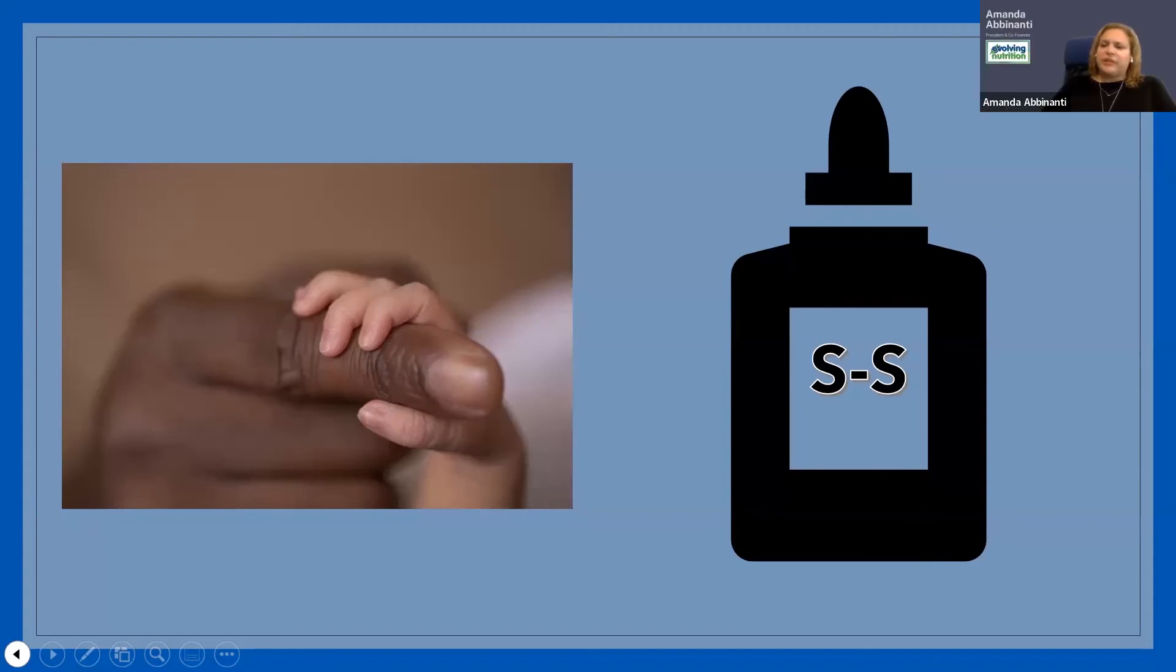How interesting. Thank you for sharing that information. Can you also explain the symptoms of SIFO? Yes. So again, SIFO is going to be a small intestinal fungal overgrowth. And it usually is married to SIBO. They usually come together. And the symptoms are exactly the same.